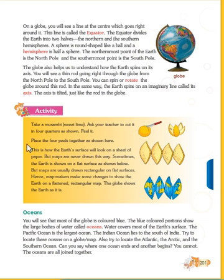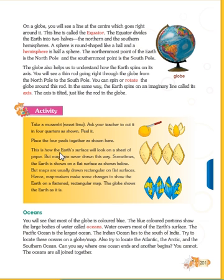Now let's go to the activity part. Take an orange and ask your teacher to cut it into four quarters as shown in the picture. Place the four pieces together the same way — this is how the earth's surface will look on a sheet of paper. But maps are never drawn in this way; sometimes the earth also shows flaps or sections as shown below.